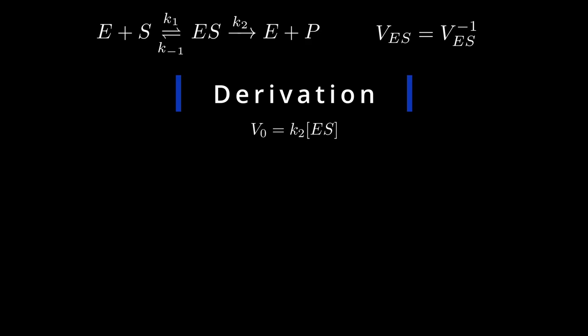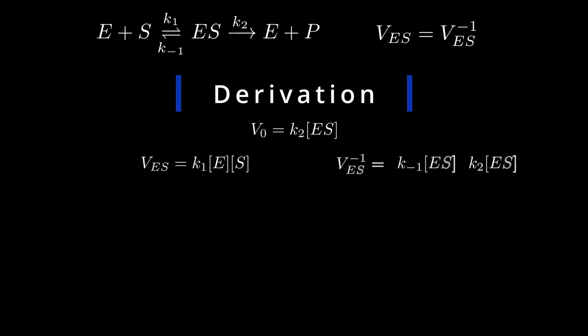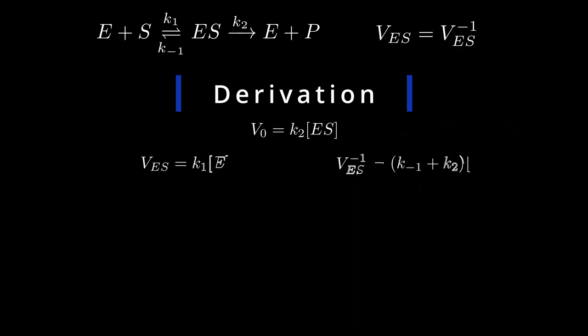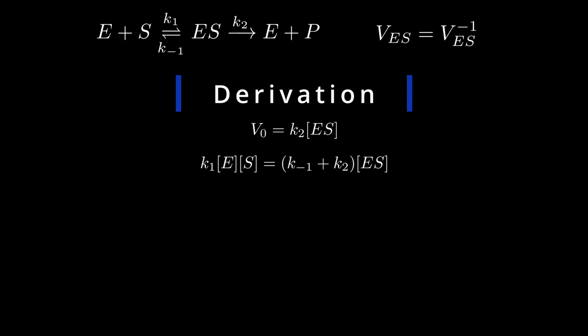We now turn to our second assumption: the rates of formation and breakdown of the enzyme-substrate complex are the same. The rate of formation of ES is quite direct. The rate of breakdown of ES, on the other hand, consists of two rates of reactions: the dissociation of ES into E and S, and the reaction ES to E and P. By adding up the individual rates of these two reactions, we end up with the rate of ES breakdown. Since we already established that the two rates are equal, we can use this equality to single out ES concentration.